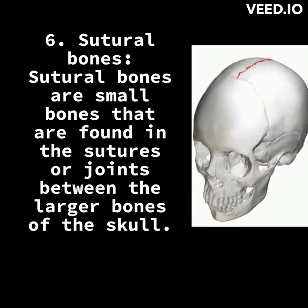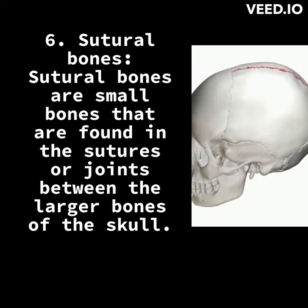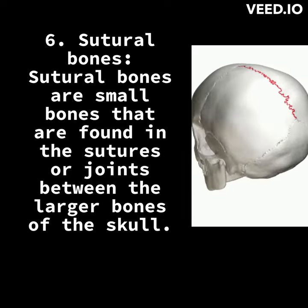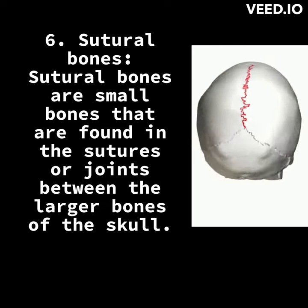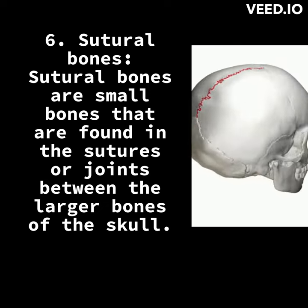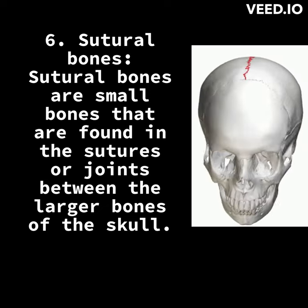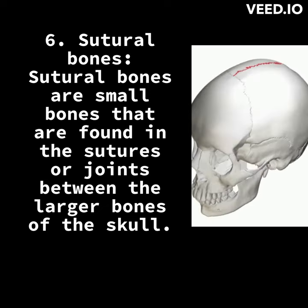6. Sutural bones. Sutural bones are small bones that are found in the sutures or joints between the larger bones of the skull.